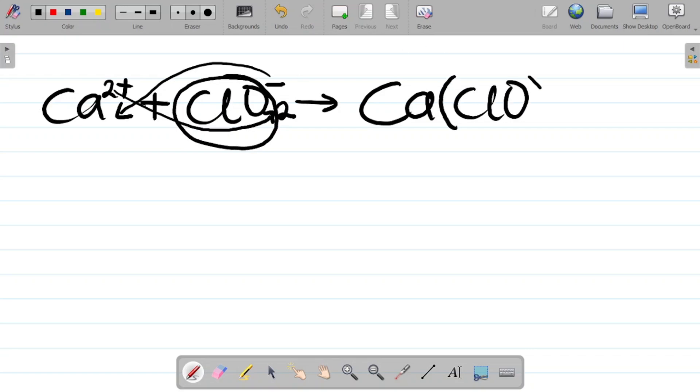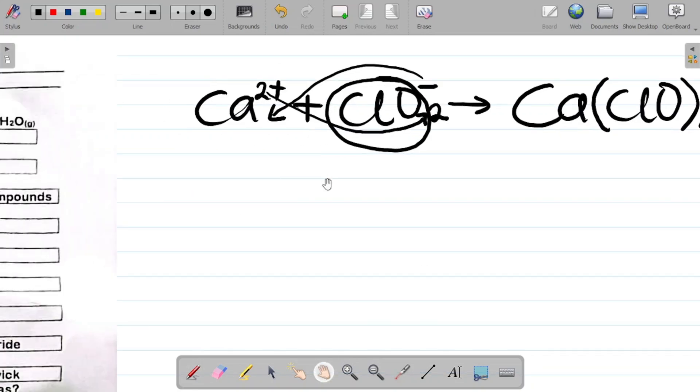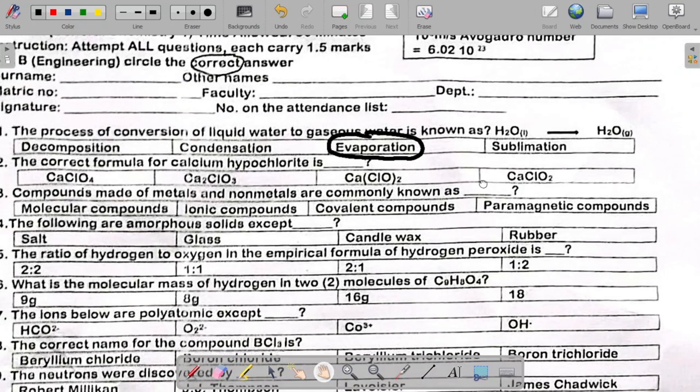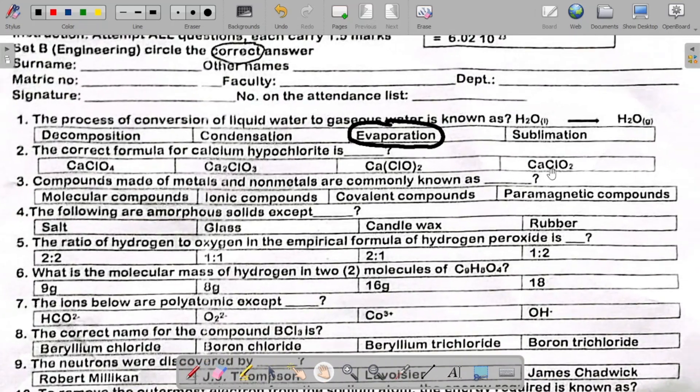The fact that you have a polyatomic ion here, you put it in brackets. So in brackets, you now have ClO, then the two comes down here. So Ca in brackets ClO2 is your answer. If you look at the last option, we have CaClO2, which is wrong because there's no brackets. So we'll take the one that has a bracket, Ca(ClO)2. This is the correct answer.